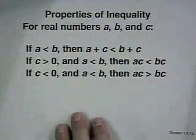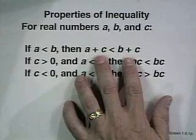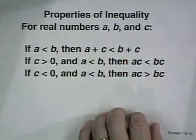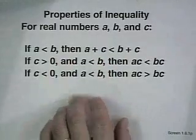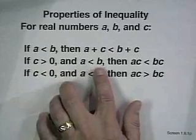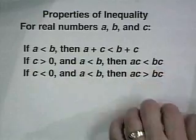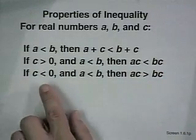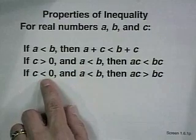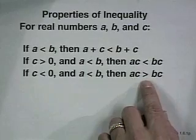The properties of linear inequalities look a lot like the properties for equations. If a is less than b, we can add the same quantity to both sides and it remains true — that's the addition or subtraction property. The multiplication property says if c is greater than 0 and a is less than b, then their products stay in the same order.